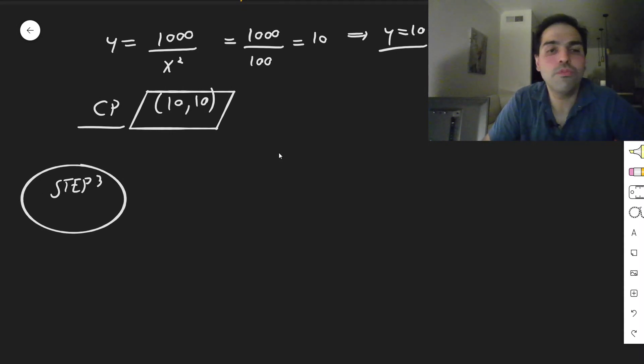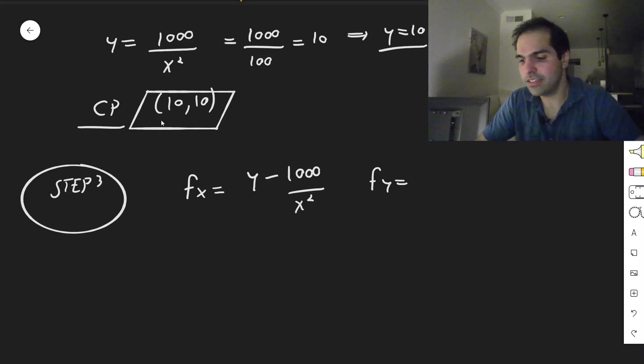So step three. In single variable calculus, if you have f double prime is negative, we have a max. If f double prime is positive, we have a minimum. Here it's slightly more complicated because there are actually four second derivatives of f.